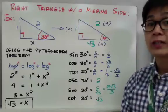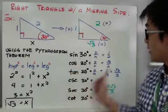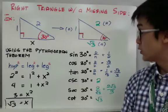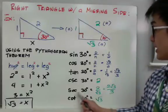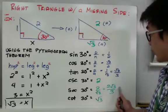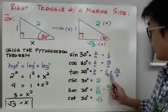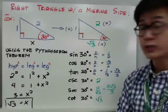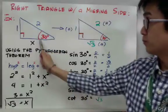For tangent 30°, we have 1 over square root of 3. In trigonometry we need to rationalize, so 1 over square root of 3 becomes square root of 3 over 3. Those are the 3 primary trig ratios. Finding their inverses, just take the reciprocal: cosecant 30° is the reciprocal of 1/2, which is 2. Secant 30° is the reciprocal of square root of 3 over 2, giving 2 over square root of 3, which rationalizes to 2 square root of 3 over 3. Cotangent 30° is the reciprocal of 1 over square root of 3, which is simply square root of 3.